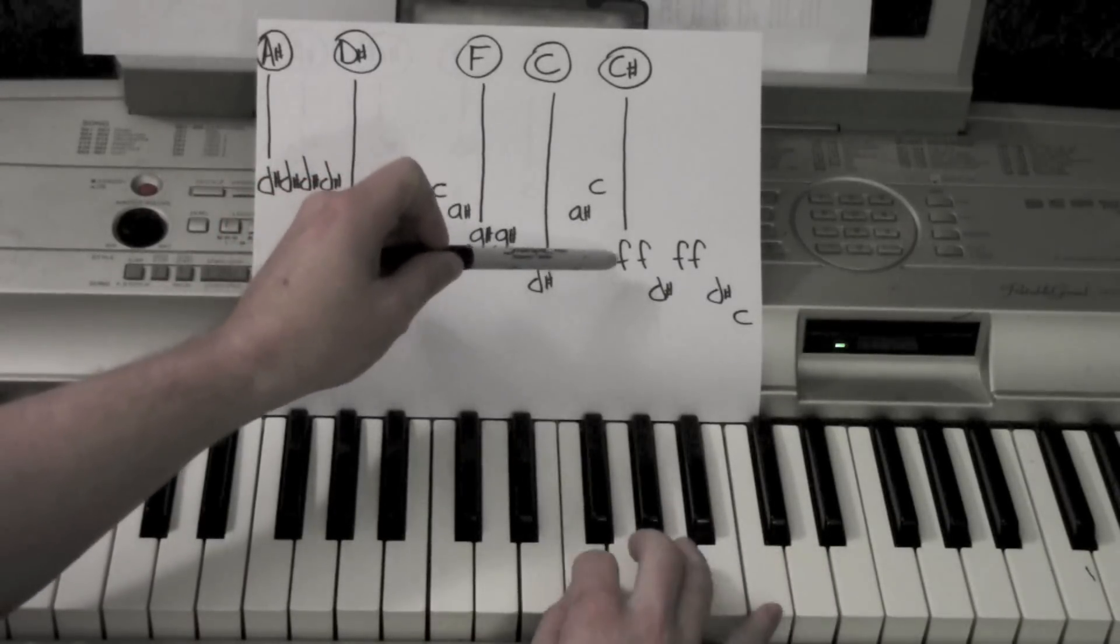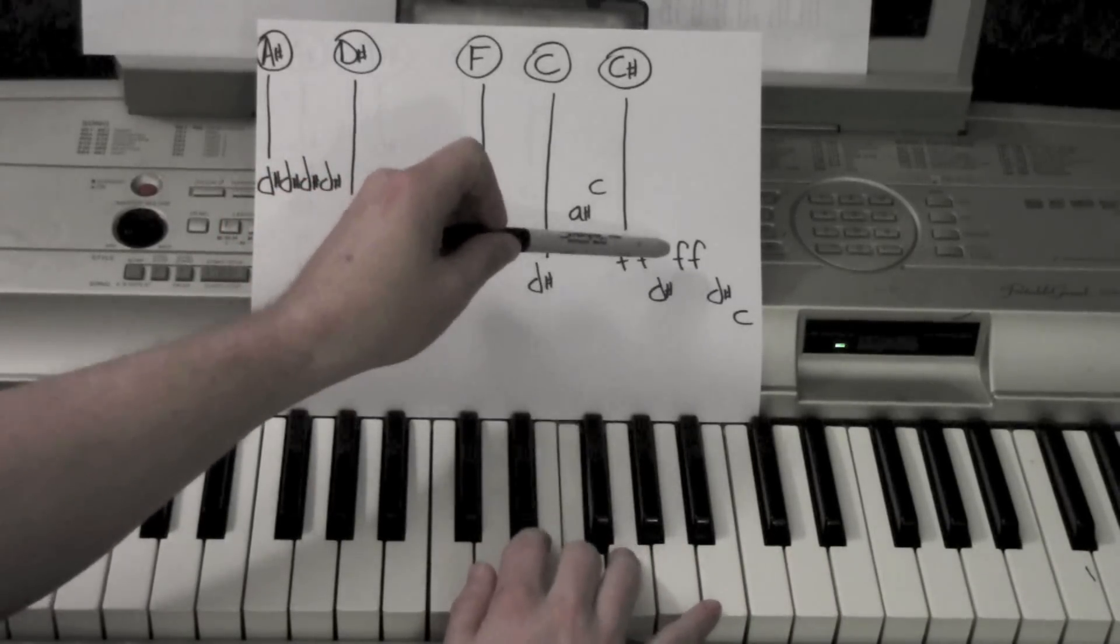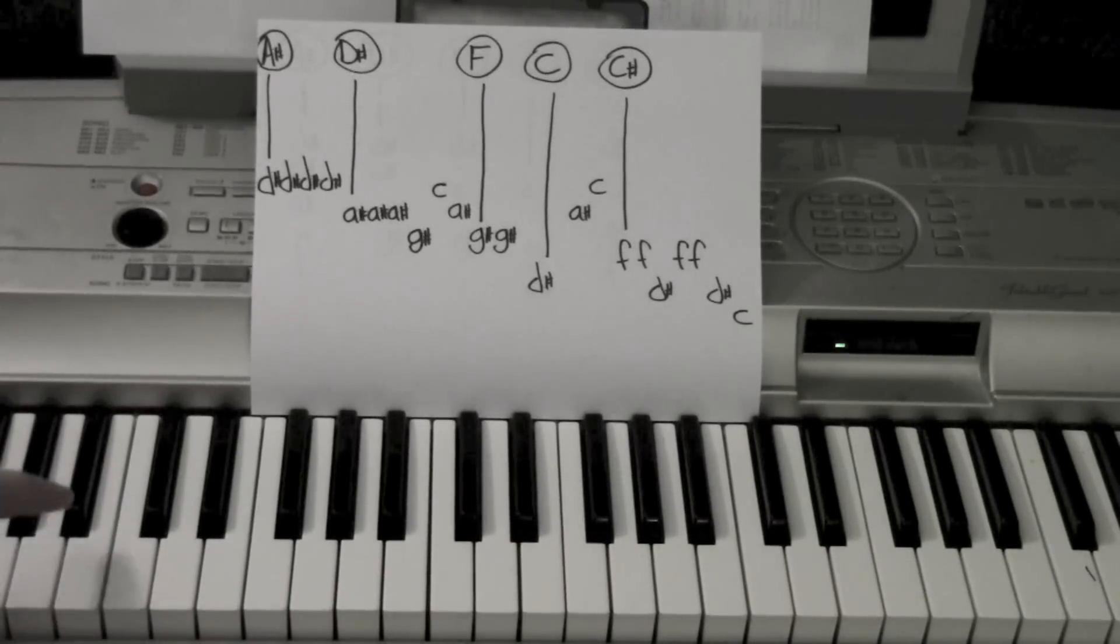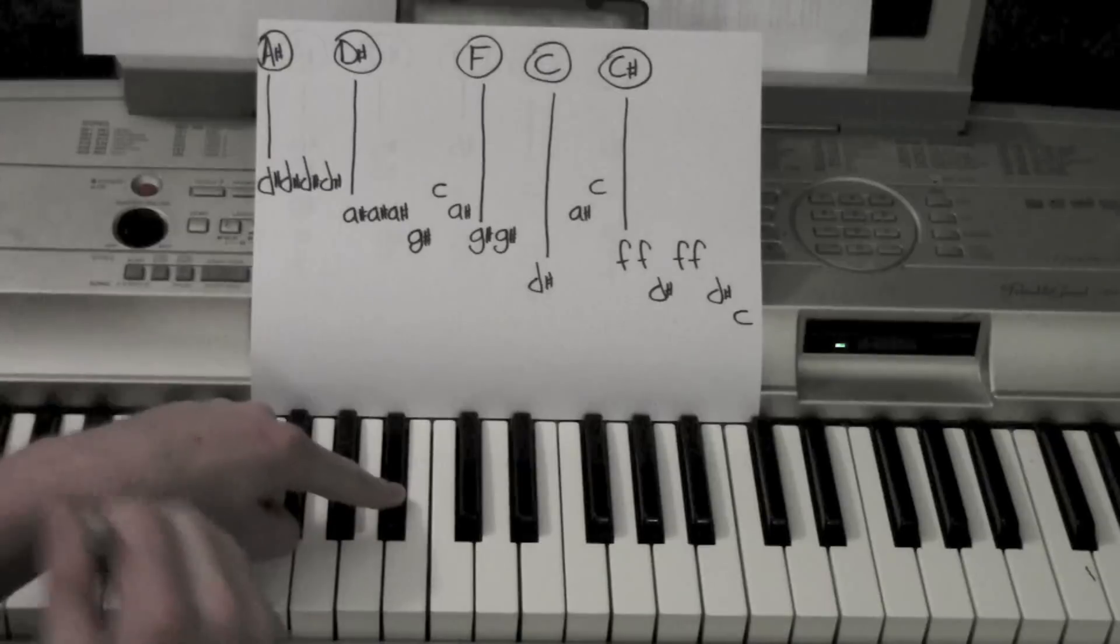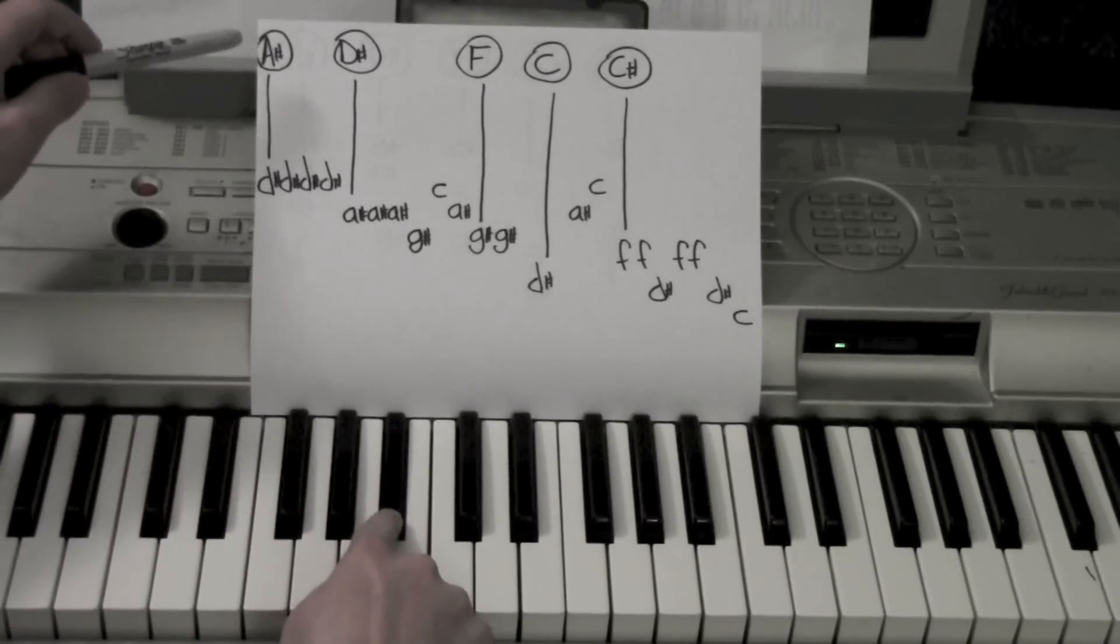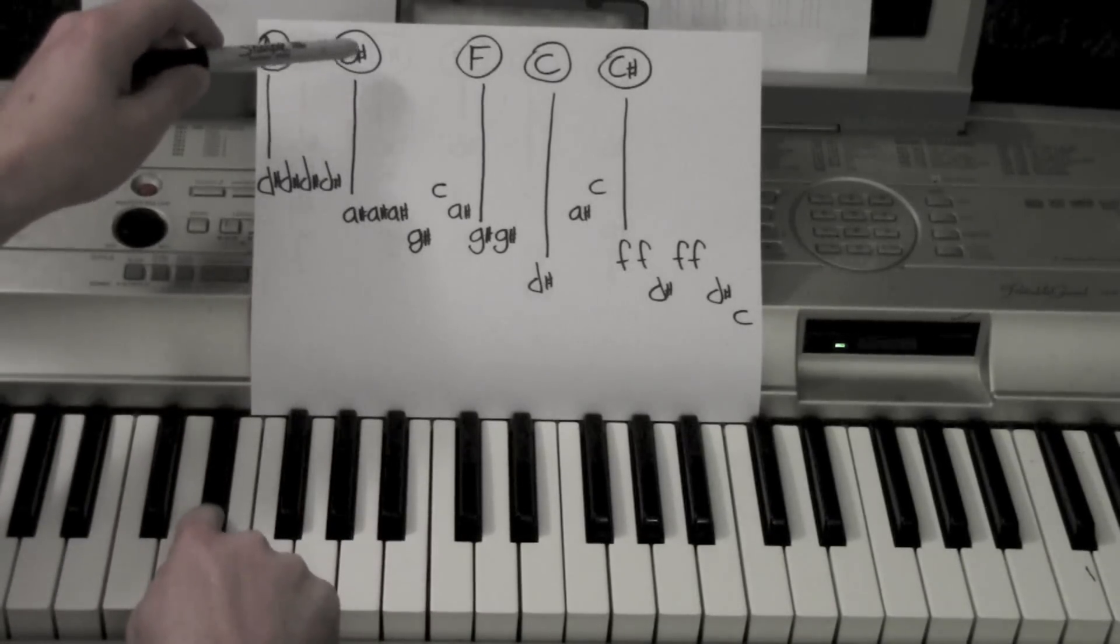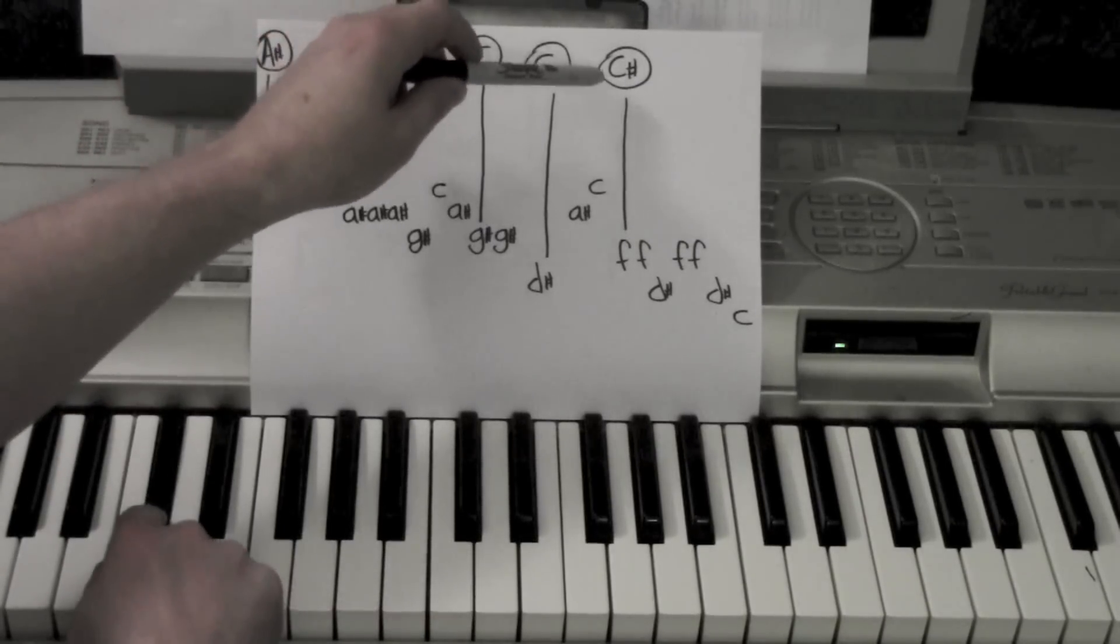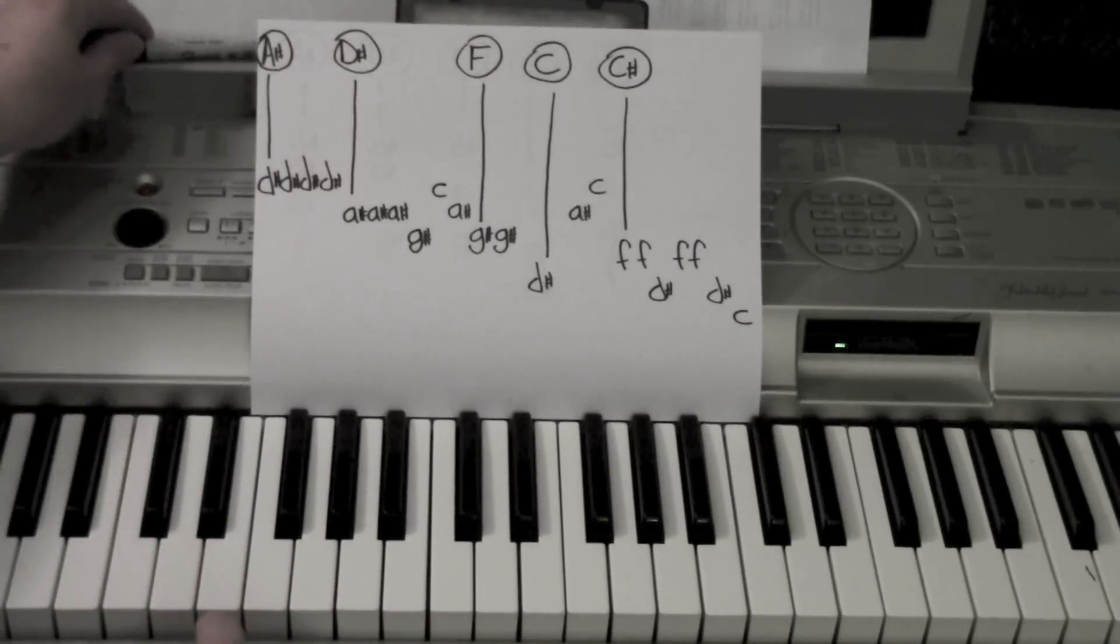A-sharp, C, F, F, D-sharp, F, F, D-sharp, C. Left hand, starting from an A-sharp, so left hand's playing A-sharp, D-sharp, F, C, C-sharp. Good. So putting those two together.